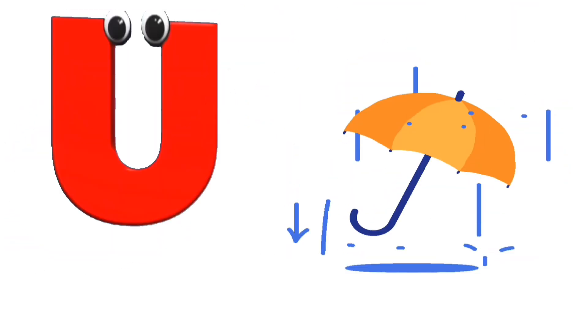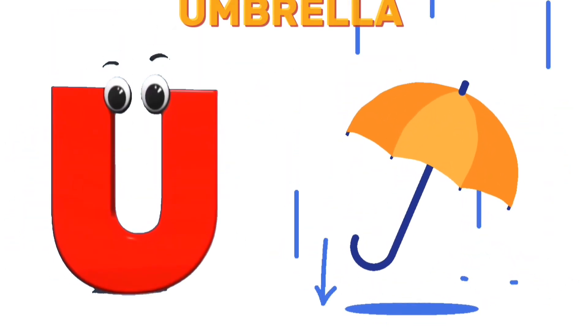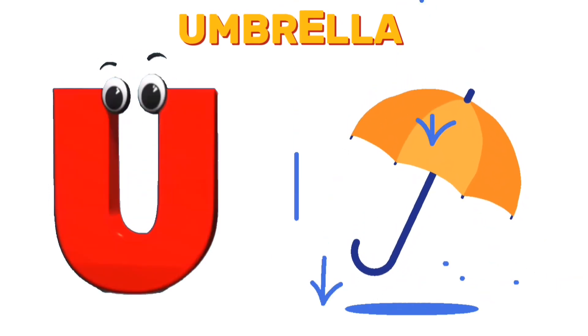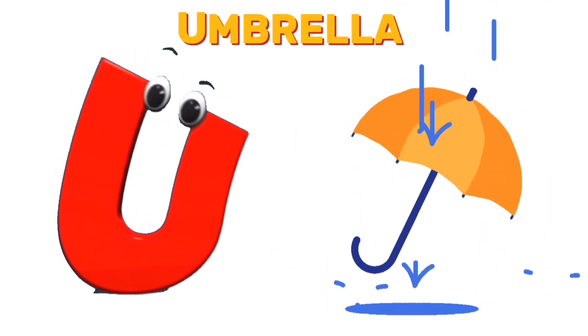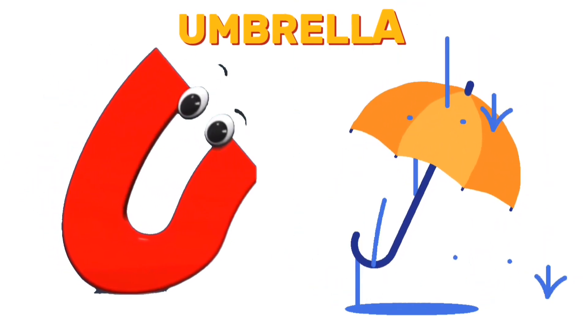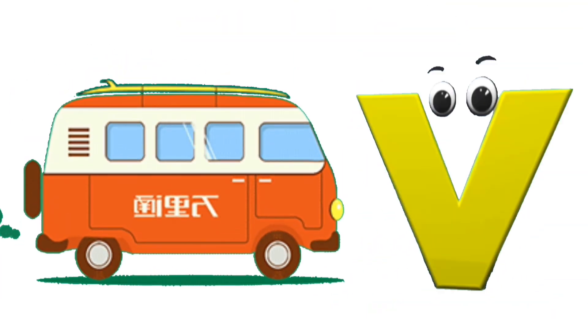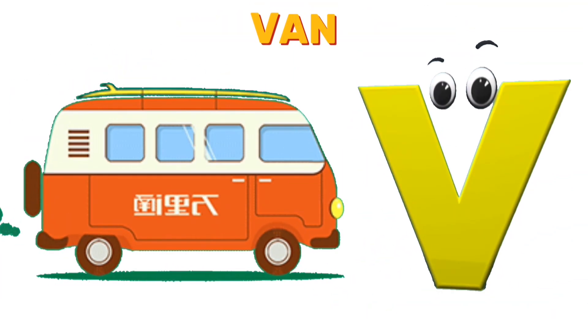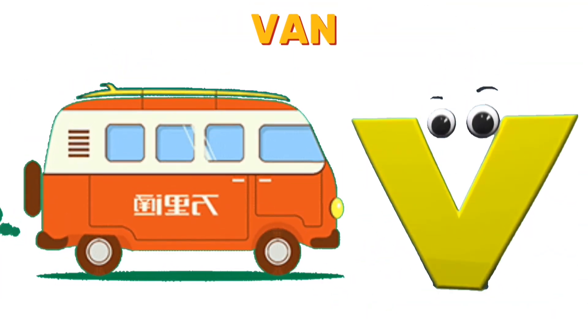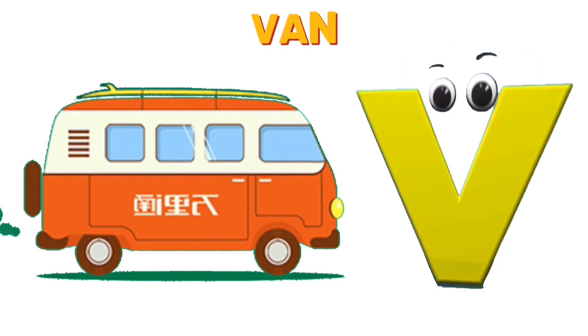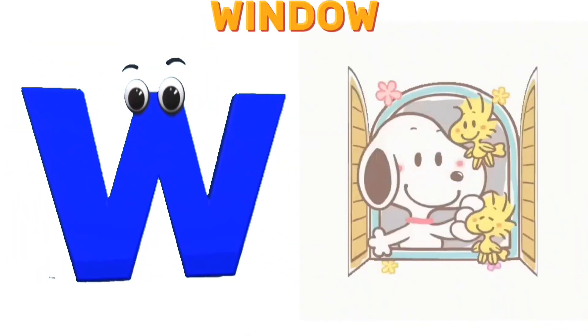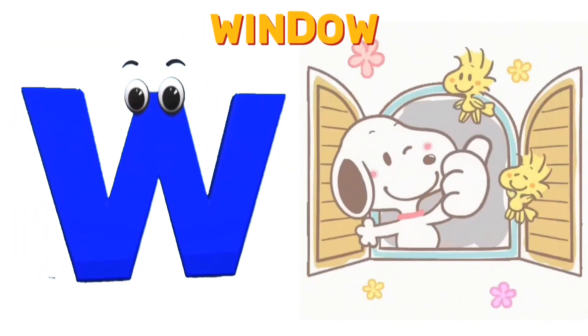U is for umbrella. U, u, umbrella. V is for van. V, v, van.